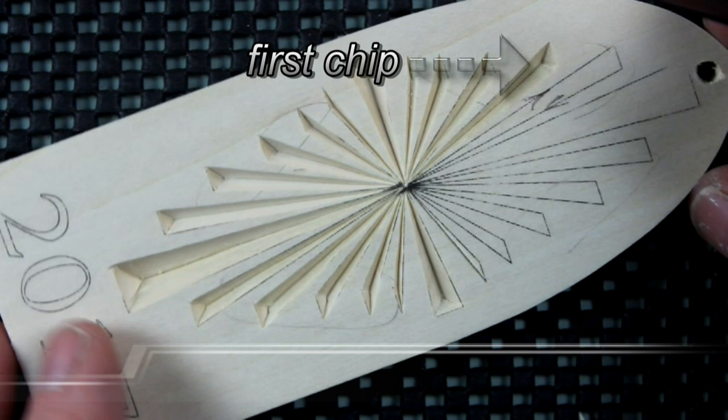If I remove this chip first and work in a counter-clockwise direction, my last chip, both of the cuts will be with the grain and I'll be in really good shape.